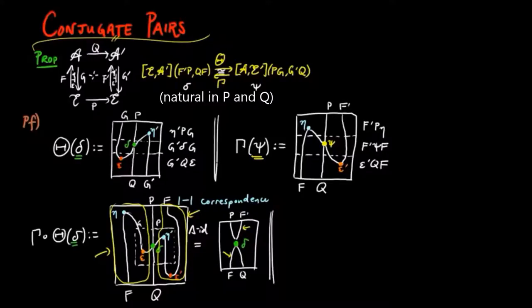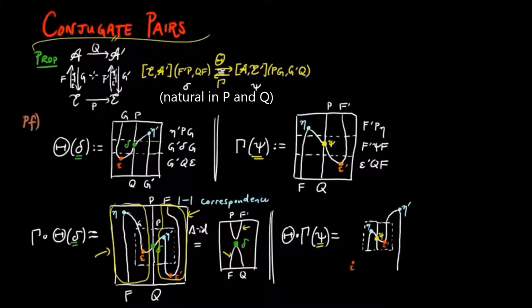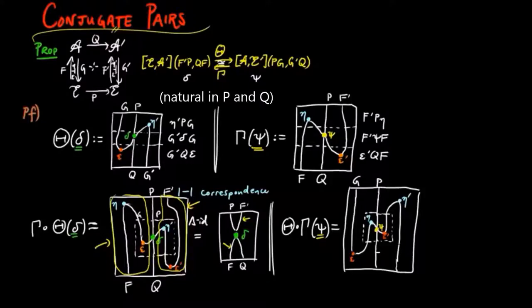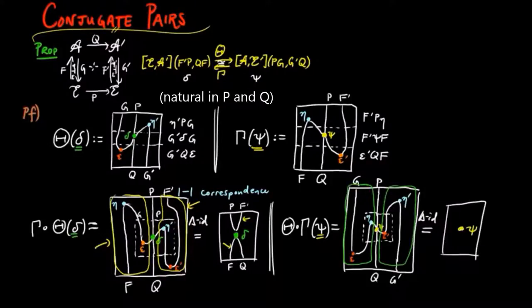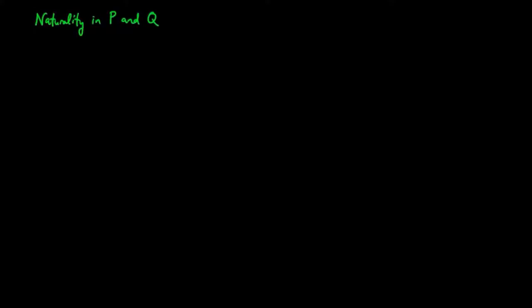Conversely, if we take theta gamma on psi, we obtain the following string diagram, where the box in the center is gamma psi. Then again, by the triangle identities for f, g and f prime, g prime, we obtain psi, showing that theta and gamma are inverse assignments, giving us the one-to-one correspondence. We still need to show naturality in components p and q.